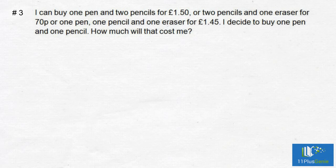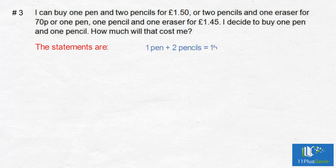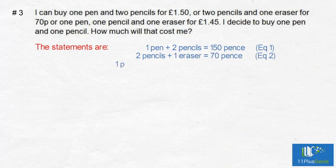Example 3. I can buy one pen and two pencils for £1.50, or two pencils and one eraser for 70p, or one pen, one pencil and one eraser for £1.45. I decide to buy one pen and one pencil — how much will that cost? The equations are: one pen plus two pencils equals 150p; two pencils plus one eraser equals 70p; one pen plus one pencil plus one eraser equals 145p.